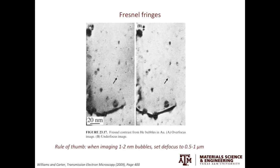I will just use one slide to talk about the Fresnel fringes. Fresnel fringes are also caused by phase contrast. We use Fresnel fringes to reveal small bubbles or very small voids in materials. For materials in nuclear applications, when these materials are irradiated, helium bubbles 1–2 nanometers in size or even smaller can form. Because those bubbles are extremely small, they are very difficult to image. One thing you can do is go slightly over-focus or under-focus to bring out the Fresnel fringes. When you over-focus, the bubble will appear dark but the Fresnel fringe will be bright. When you under-focus, the bubble will be bright but the Fresnel fringe will be dark. The rule of thumb is when imaging 1–2 nanometer bubbles, you can set the defocus value to 0.5 to 1 micron to achieve the optimum imaging condition.